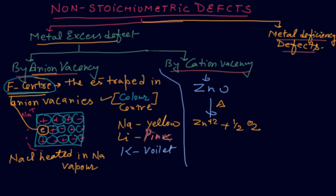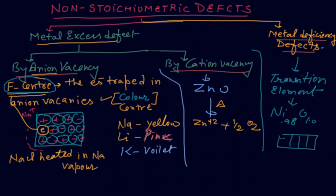Now second is that metal deficiency defect. This is shown by the transition elements. Transition elements you know very well, that is the d-block elements which show the variable valences. Like as nickel 0.98 and oxygen 1.0, which means that in the d-block element, vacant d-orbital is present and in that vacant d-orbital small atoms can occupy.